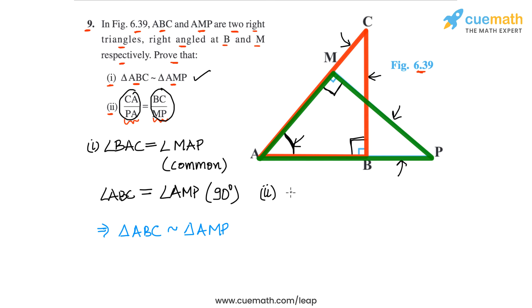These two ratios definitely have to be equal, simply because the two triangles are similar. So let's write this. We have CA by PA, the first ratio, must be equal to BC by MP. And the reason for this is simply because of part 1, because triangle ABC is similar to triangle AMP.